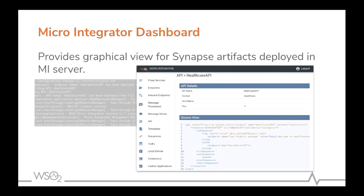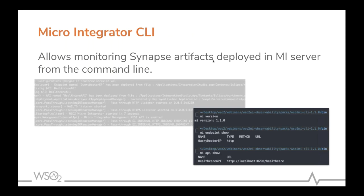I'm going to hand over to Senthuran, who will explain the present capabilities of the Enterprise Integrator around observability. When it comes to the WSO2 Micro Integrator, the first thing you need to view is management information — information about synapse artifacts deployed in the MI. For that we provide two representations: the first is the Micro Integrator Dashboard, targeted at business users who would like to see a graphical view. The second is the Micro Integrator CLI, targeted towards DevOps users who want everything in their terminal — similar to docker CLI or kubectl.